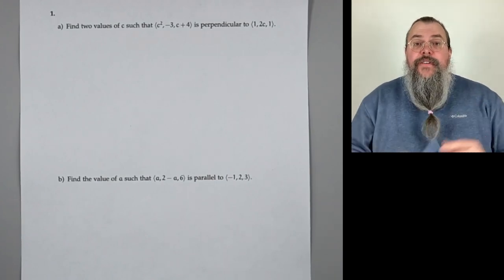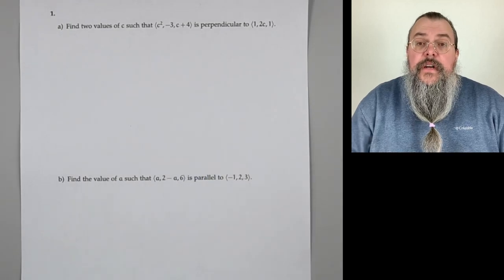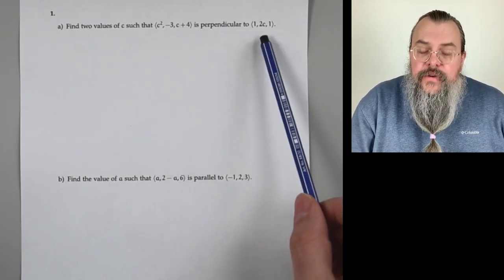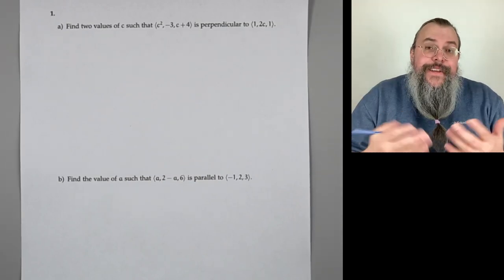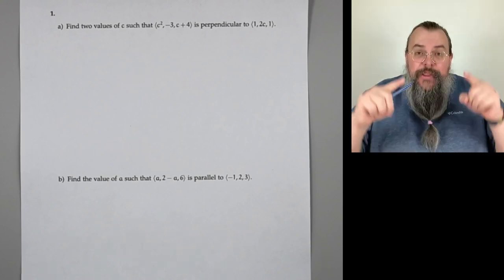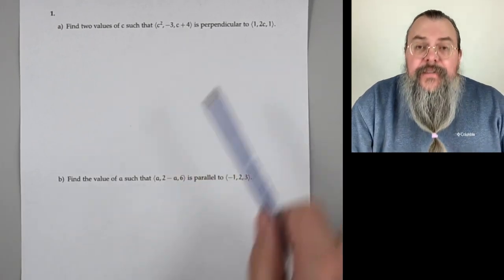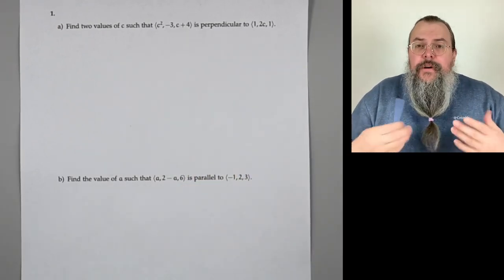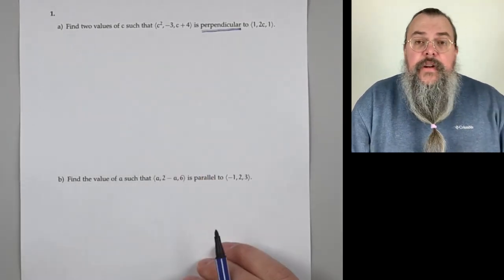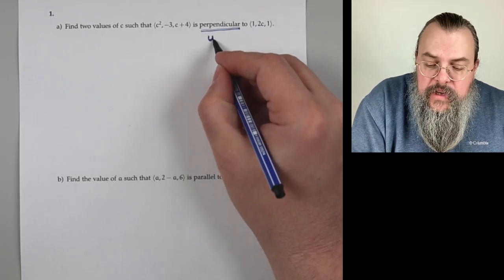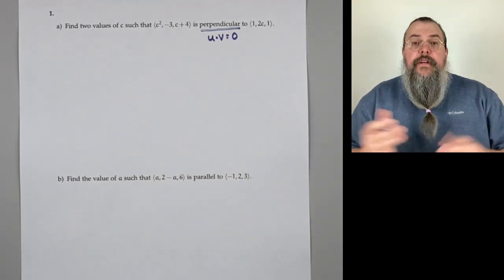Number one: find two values of C such that the vector ⟨C², -3, C+4⟩ is perpendicular to the vector ⟨1, 2C, 1⟩. Now, how do we know these are vectors and not points? We see those angled brackets. How do we know things are perpendicular? There's a simple way to tell if vectors are perpendicular, and that is you look at the dot product. If u · v = 0, that means they're perpendicular.